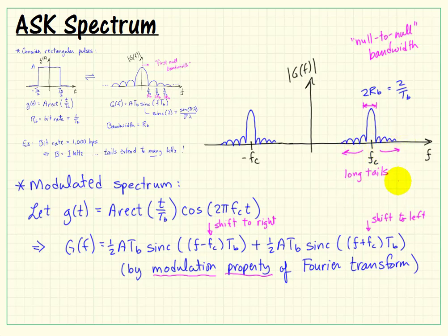Now again, these tails extend for a pretty significant direction on either side. So we say that this rectangle function or rectangle-shaped pulse would be said to be spectrally inefficient because we see that